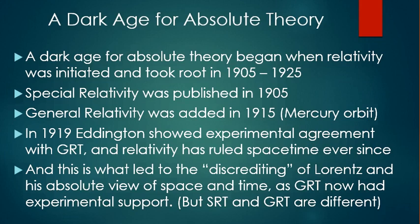A dark age for absolute theory began when relativity was initiated and took root in the years 1905 to 1925. Special relativity was published in 1905, and the general theory was added in 1915, with a focus on the advance of Mercury's perihelion in its orbit. In 1919, Eddington showed experimental agreement with general relativity, and relativity has ruled spacetime ever since. And this is what led to the discrediting of Lorentz and his absolute view of space and time, as general relativity had now experimental support.